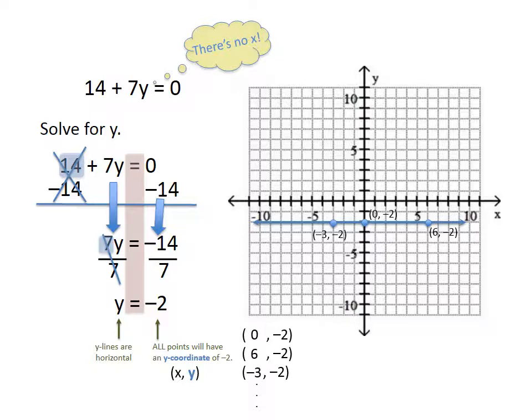So that would be how you would approach naming some points that are on horizontal and vertical lines.